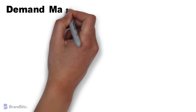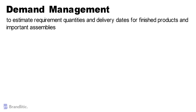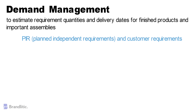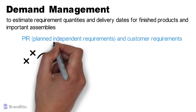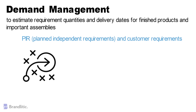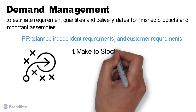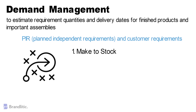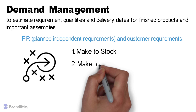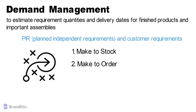Let's talk about demand management in SAP PP. The function of demand management is to estimate requirement quantities and delivery dates for finished products and important assemblies. It uses PIR or planned independent requirements and customer requirements for its working. The planning strategies must be defined for a product as they represent the methods of production for planning and manufacturing. There are two methods: Number one, make to stock, in which stock is produced independently of orders. Number two, make to order, which applies to production of material for a specific individual sales order or line item.